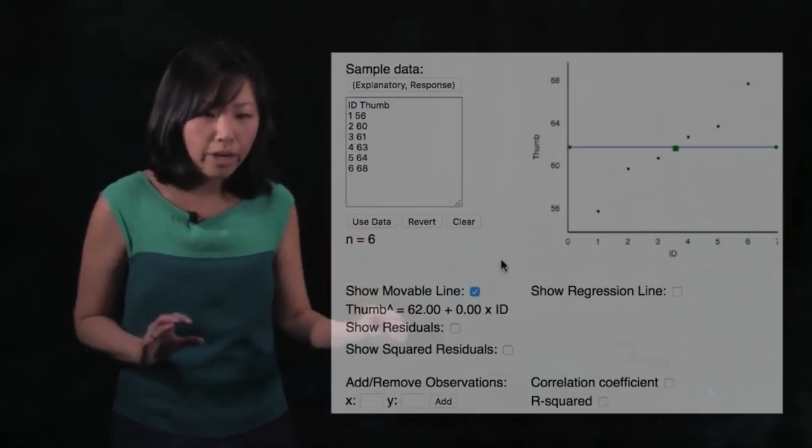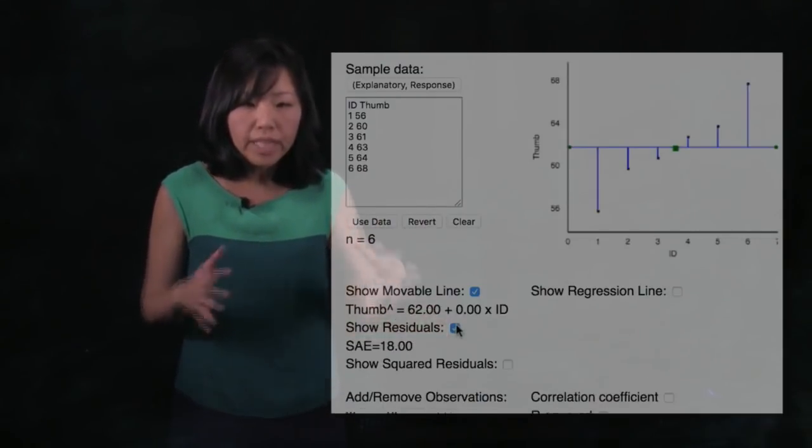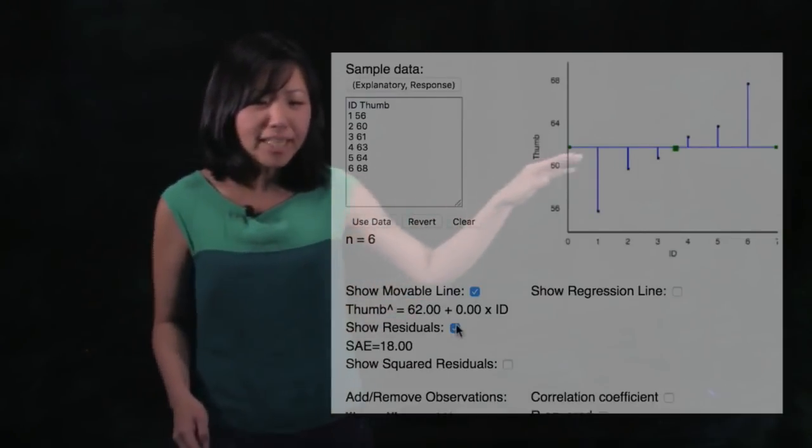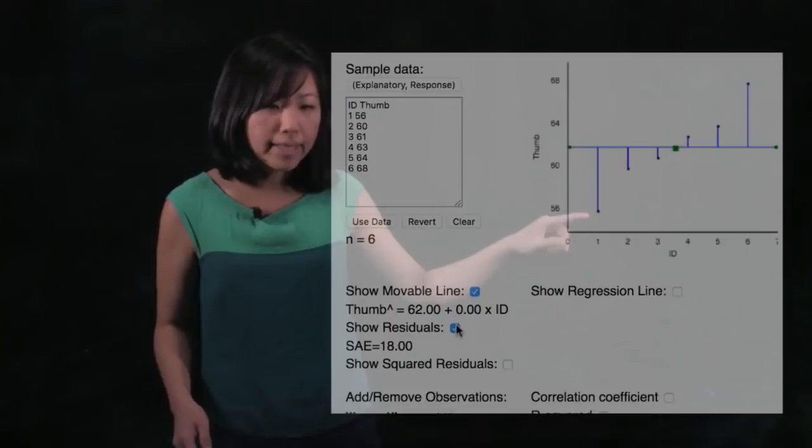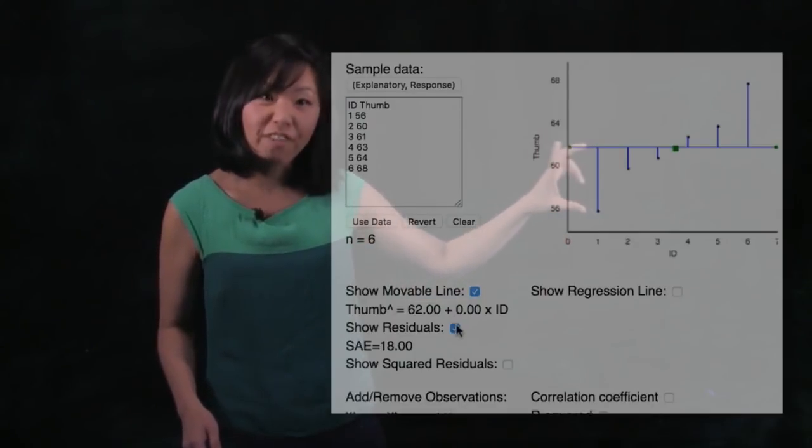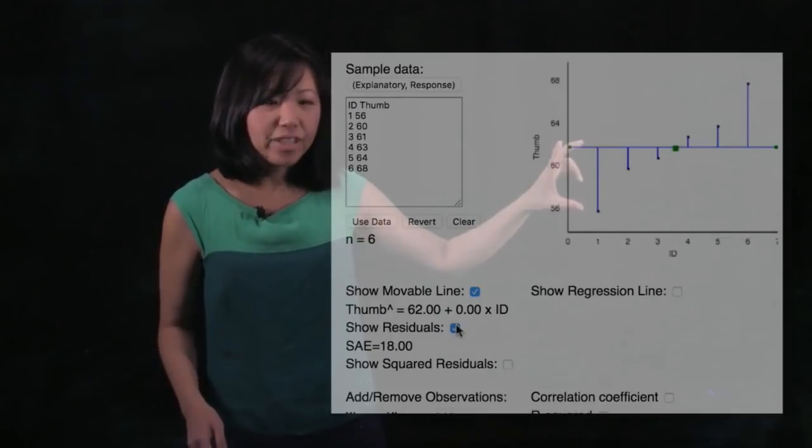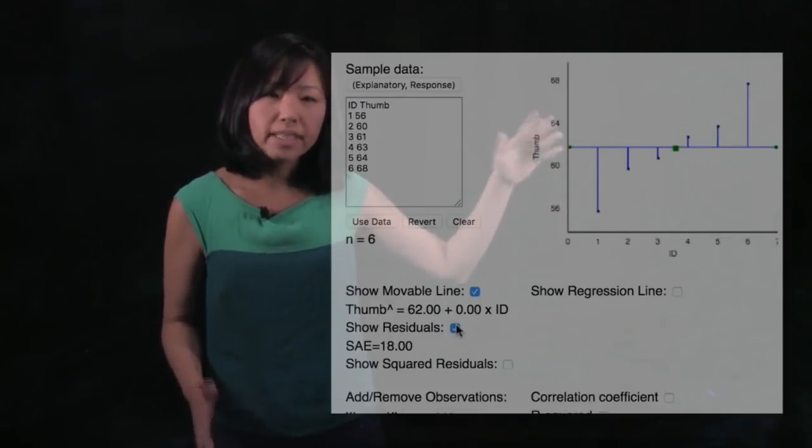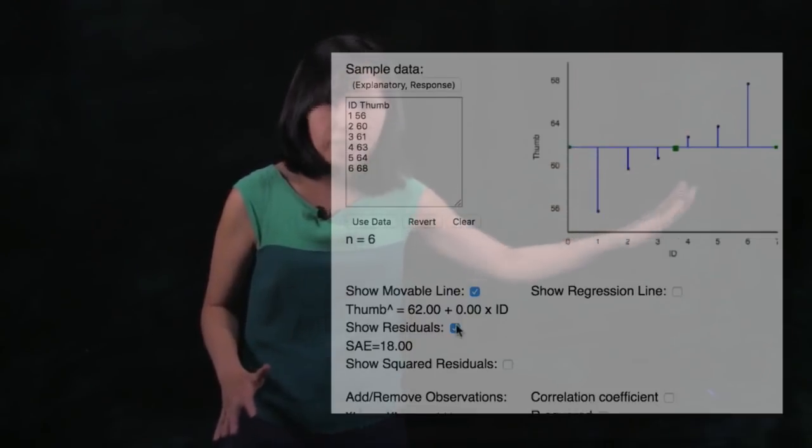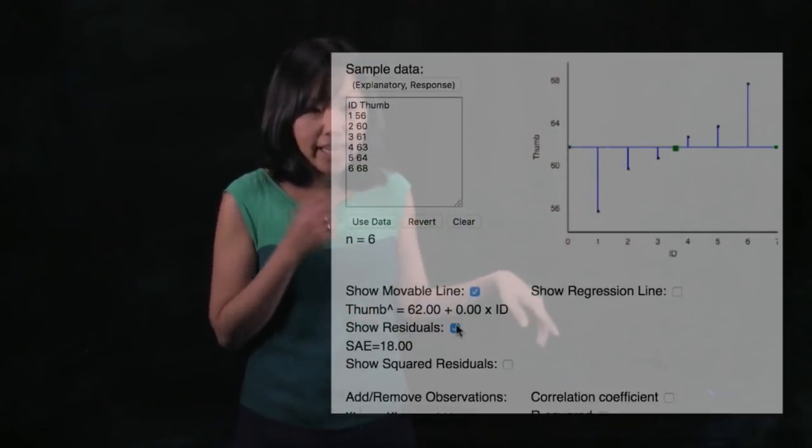So I'm going to show you that error by clicking on show residuals. So this is the error off of this model. And so you could see that for student one's thumb, this is how much error is off the mean. And you could see that the mean is quite nice because it seems to balance the errors above the mean as well as below on the positive side and the negative side.